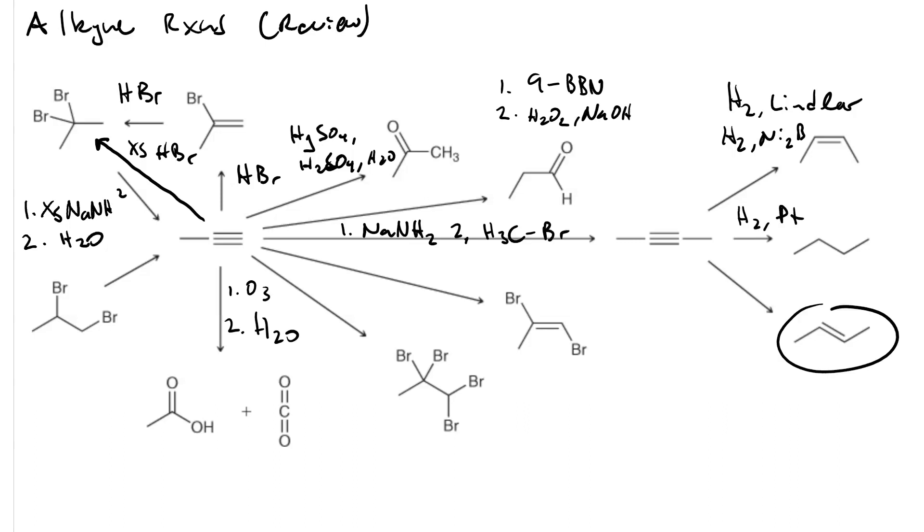To go to the trans alkene, we need to do the dissolving metal reduction. So that will be sodium in ammonia, Na slash NH3. The slash shows that the ammonia is the solvent.